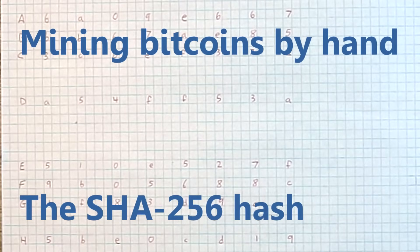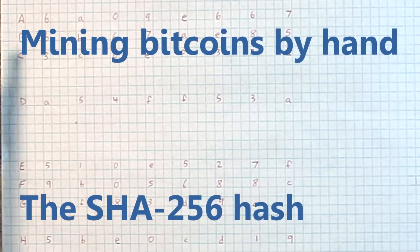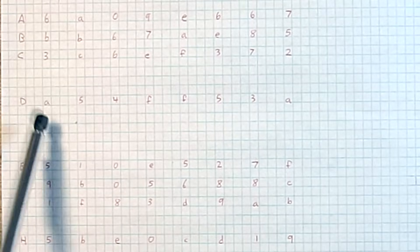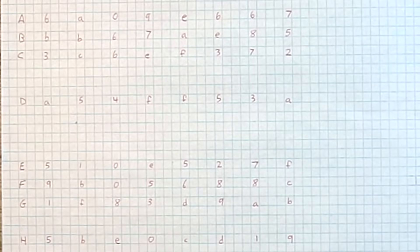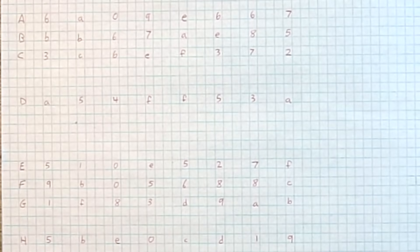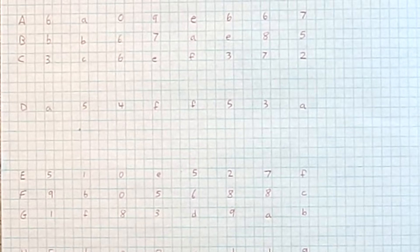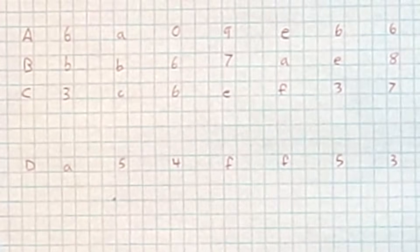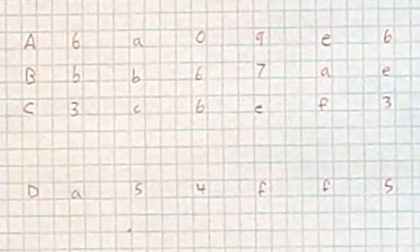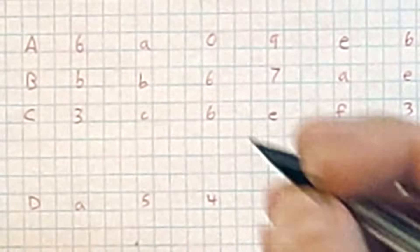To do one round of SHA-256 we start with eight inputs A, B, C, D, E, F, G, H. For the first round these are constants provided by the NSA — no joke. Our first step is going to be to convert these to binary, which is straightforward but a little tedious.